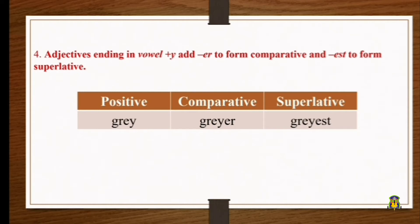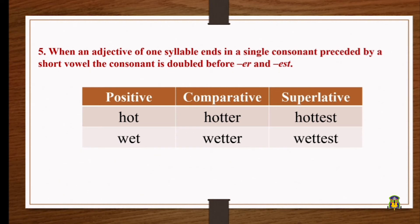In some cases, adjectives end with a vowel y. In that case, we add -er to get the comparative form and -est to get the superlative. For example, 'gray' — the comparative is 'grayer' and the superlative is 'grayest.' The next rule: when an adjective of one syllable ends in a single consonant preceded by a short vowel, the consonant is doubled, then we add -er for comparative and -est for superlative.